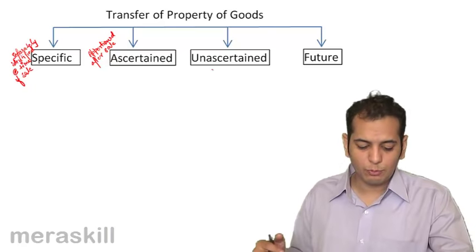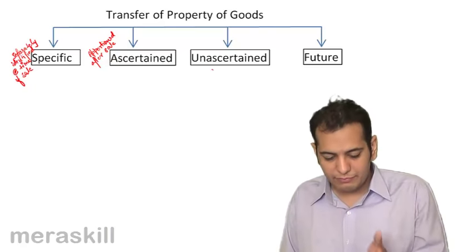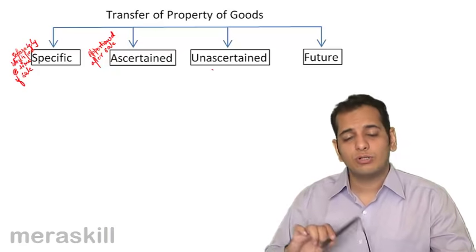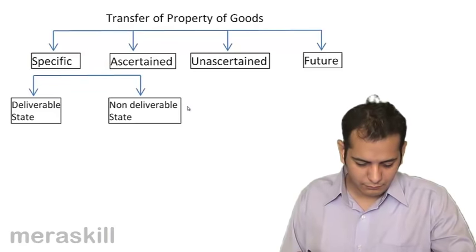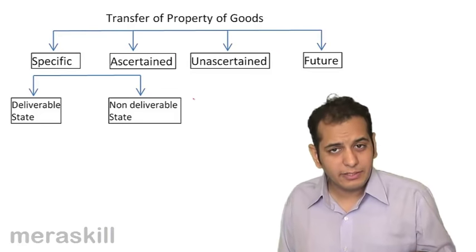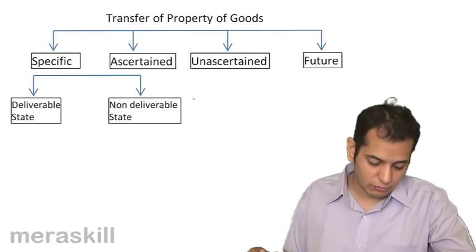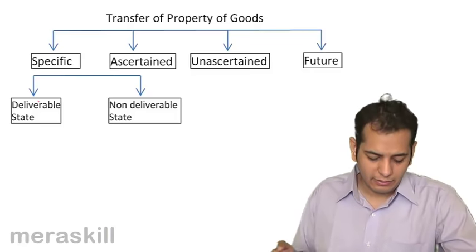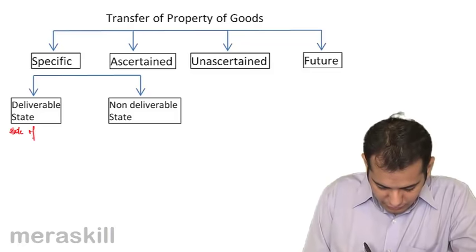Now let's see when does property transfer in specific goods, ascertained goods, unascertained goods, and what are the provisions relating to future goods. In the case of specific goods, they'll either be in a deliverable state or they'll not be in a deliverable state. Deliverable state means the state of goods such that the buyer cannot refuse the acceptance of delivery.